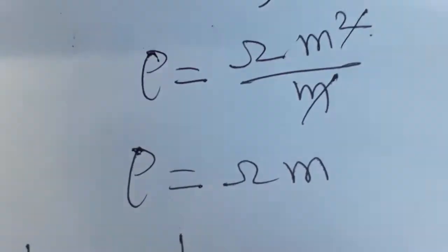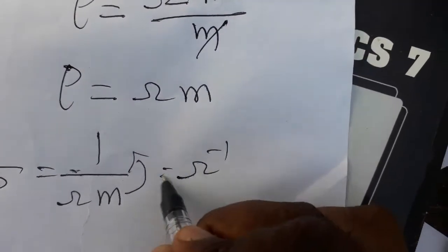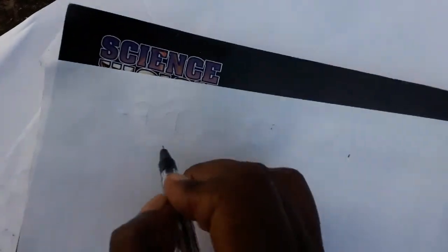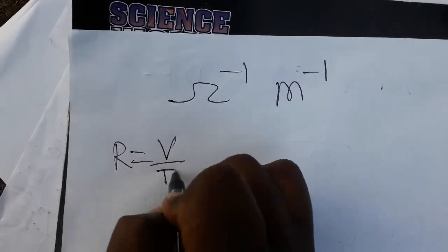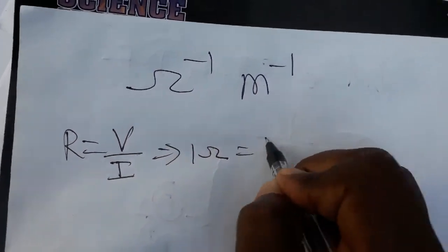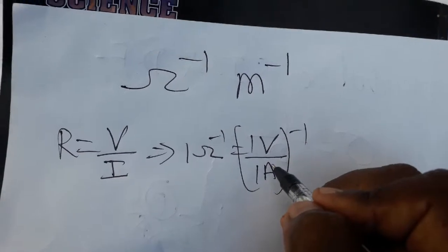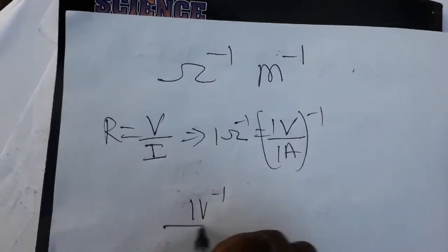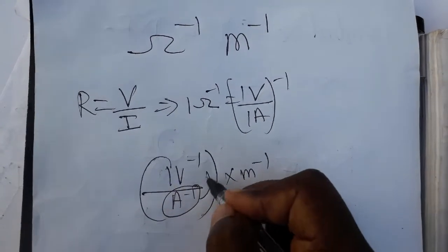Conductivity is 1 by resistivity, that means 1 divided by ohm meter. So we get ohm inverse meter inverse. That is the SI unit for conductivity. Now we should find what ohm inverse is. R is equal to V by I, so 1 ohm is equal to 1 volt by 1 ampere, meaning ohm inverse is ampere per volt.